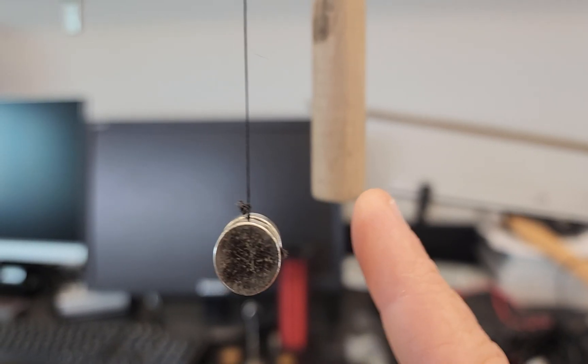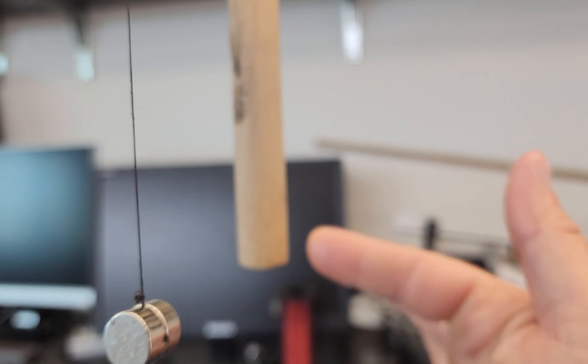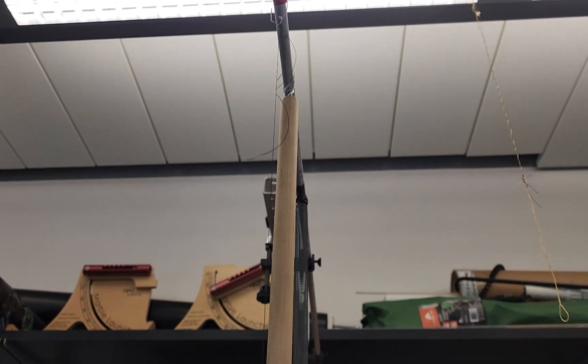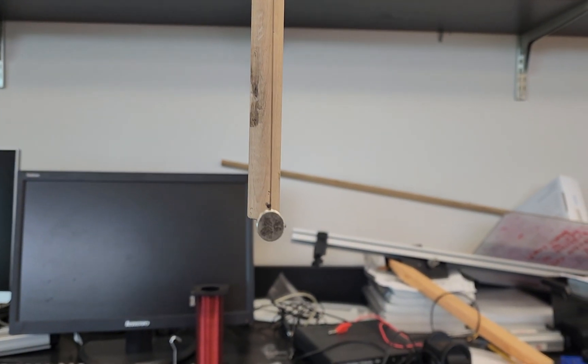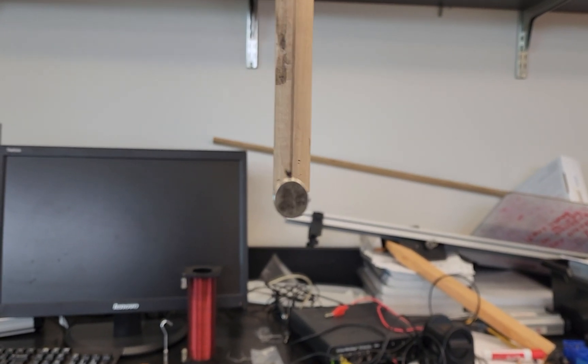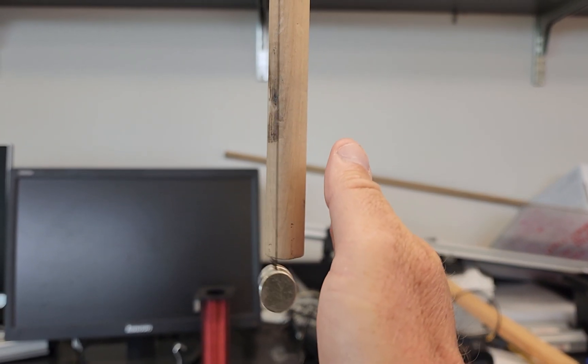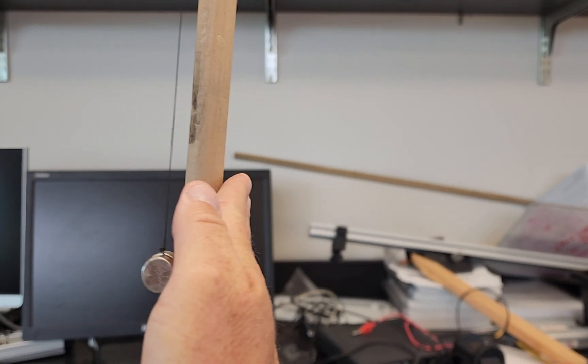So here is a simple pendulum made out of a magnet hanging from a string next to a physical pendulum that's just a wooden dowel. And in these cases, they're not equal masses, but they are equal lengths, 91 centimeters in this case. And so what we're going to do is we are going to set them into motion.